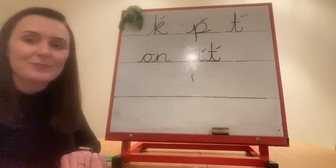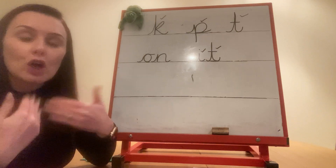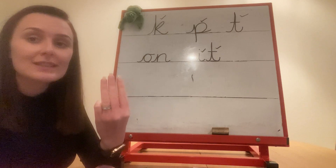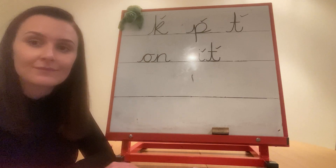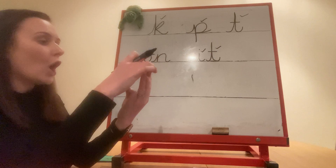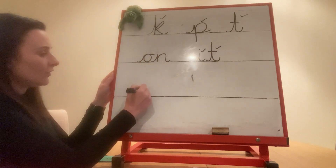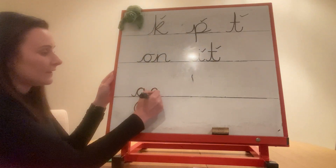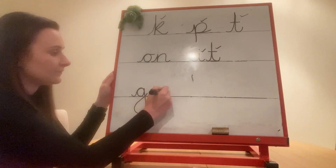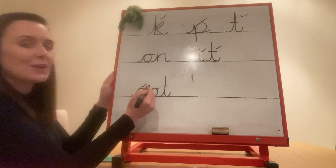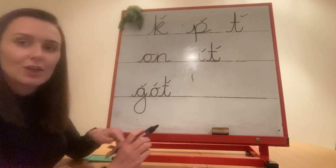Let's try another one. Ready? Got. Get three Fred Fingers — there are three sounds in this word. Say got and pinch the sounds. Now write it. Are we ready to check? Got: g, o, t. Give yourself a tick for g, a tick for o, and a tick for t. Or fix it.